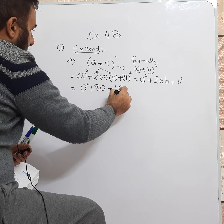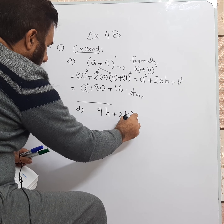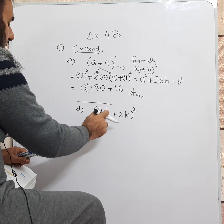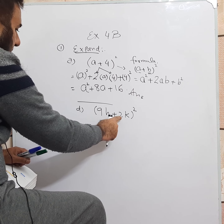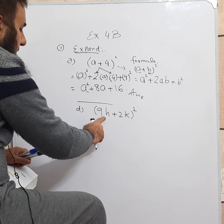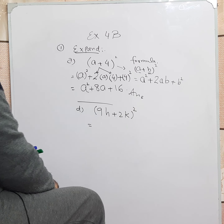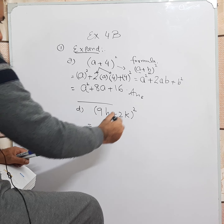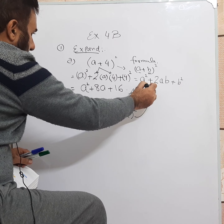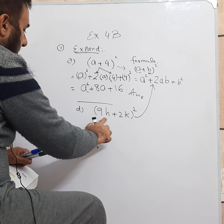Now we will be doing another part. Let's do part D. Part D says: (9H plus 2K) whole square. So we know that 9H is the first term, 2K is the second term, and there is a plus sign. First term plus second term, and then whole square.